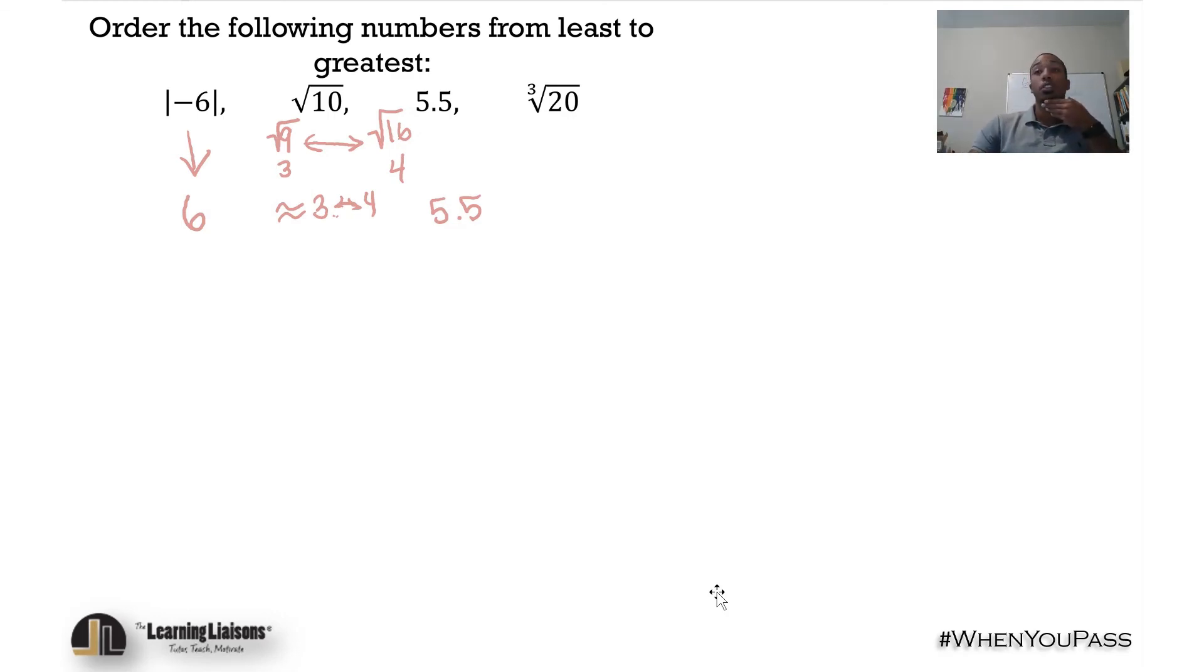Let's think about it. Our perfect cubes: we have 1 cubed is 1, 2 cubed is 8, 3 cubed - hopefully from the previous example you noticed that it's 27. So we know that the cube root of 20 is somewhere between 2 and 3.